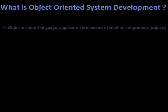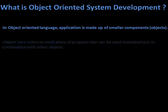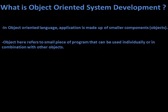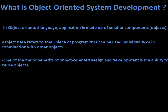What is OOSD? It is an application made up of smaller components. An object refers to a small piece of program that can be used individually or in combination with other objects. One of the major benefits of OOSD is the ability to reuse the objects.